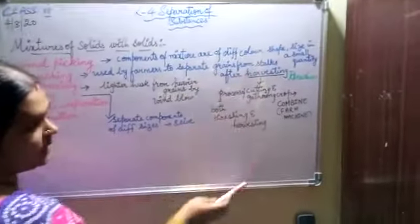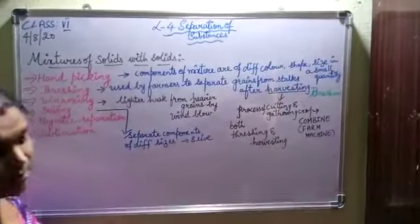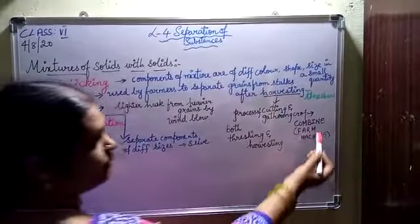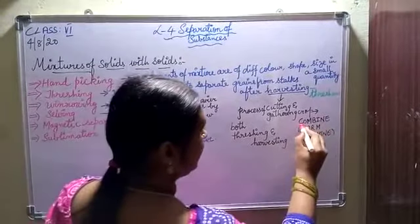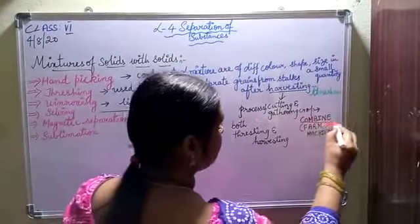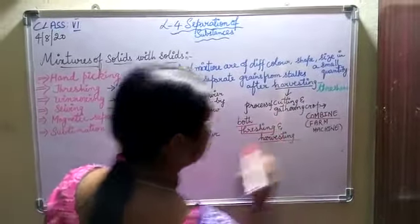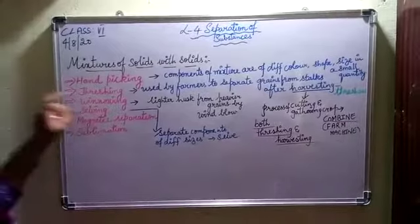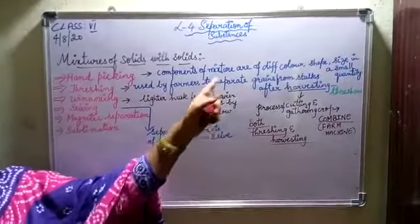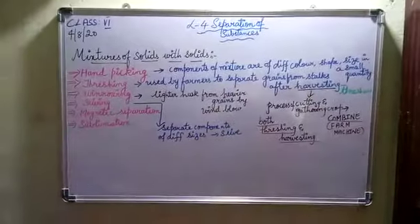Both harvesting and threshing are done by a farm machine called a combine. A combine is a farm machine that does both threshing and harvesting. So threshing is a method used by farmers to separate grains from the stocks.